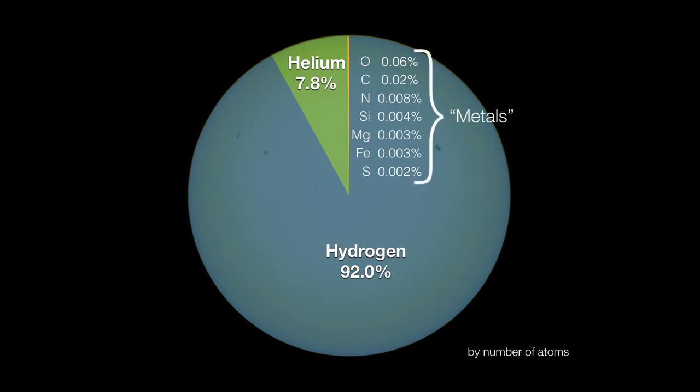In other words, we think of any element that is heavier than helium as a metal. Now all of these metals combined add up to about 0.2% of the total number of atoms in the Sun. That's not a lot, yet even this trace amount of metals makes our Sun a metal rich star.